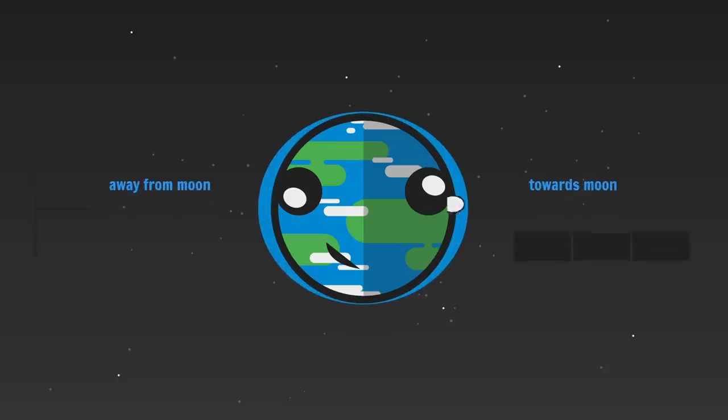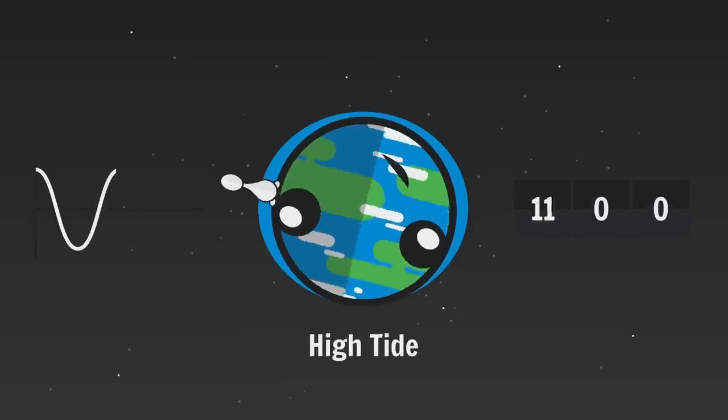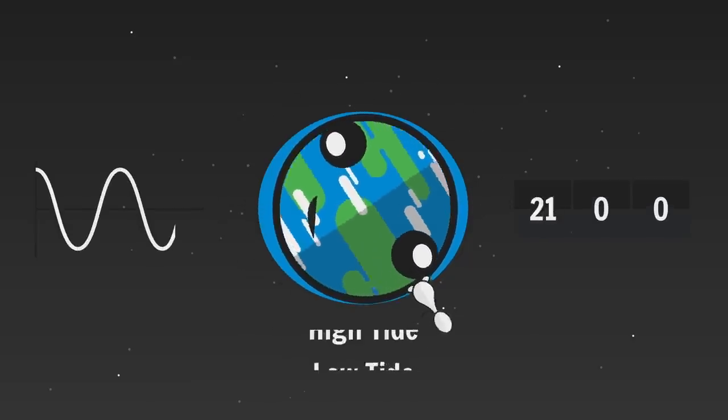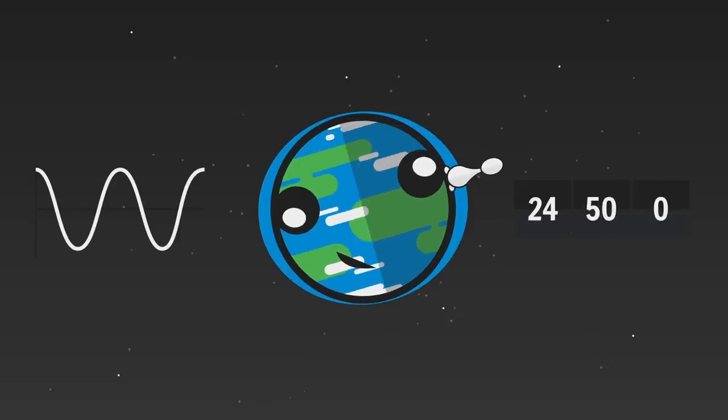As the Earth rotates through these bulges, it experiences tides. High tide, six hours later low tide, then high tide, low tide, and back to high tide. Plus a little correction because of how the Moon orbits. These are called semi-diurnal tides, two high tides and two low tides per day.